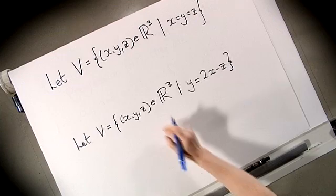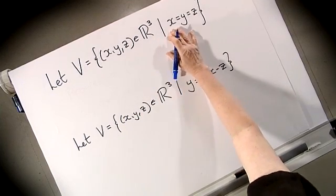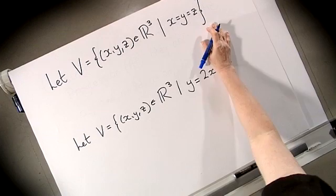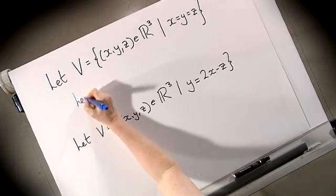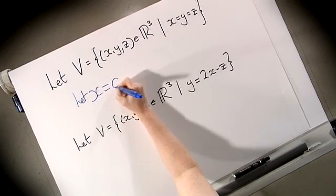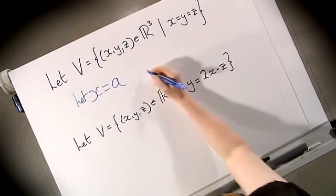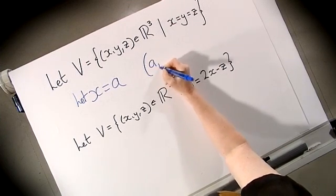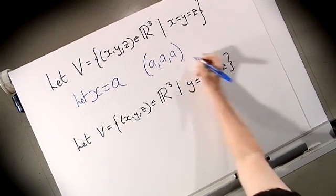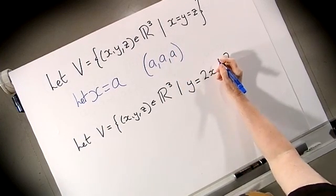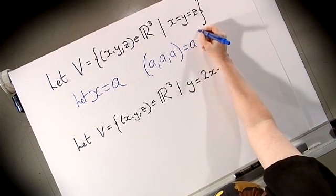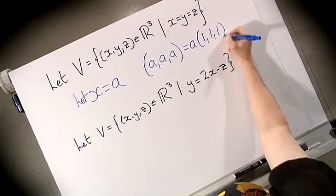We're now going to consider two subspaces of R³, the three-dimensional space which you might be more familiar with. So V is a subspace where x is equal to y equals z. So again we're going to use the ABC method, so we're going to let x equal a, and because y and z are also equal to x, they're also equal to a. So our general vector is (a, a, a), and we can write this as a times the vector (1, 1, 1). This time we only needed one vector, so this is a one-dimensional space.